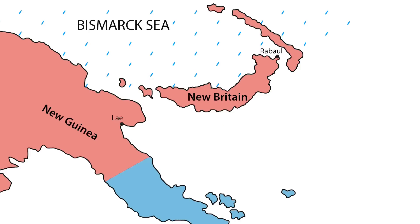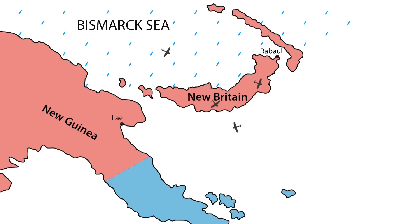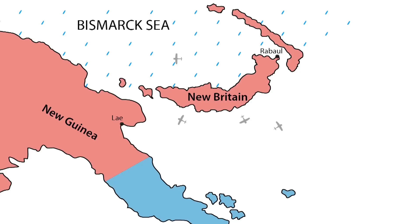General Kenney also had two possible strategies: concentrate most of his reconnaissance aircraft along the northern route or along the southern route. Since both commanders had two possible strategies, there were four possible outcomes. Let's see each of these possible scenarios.